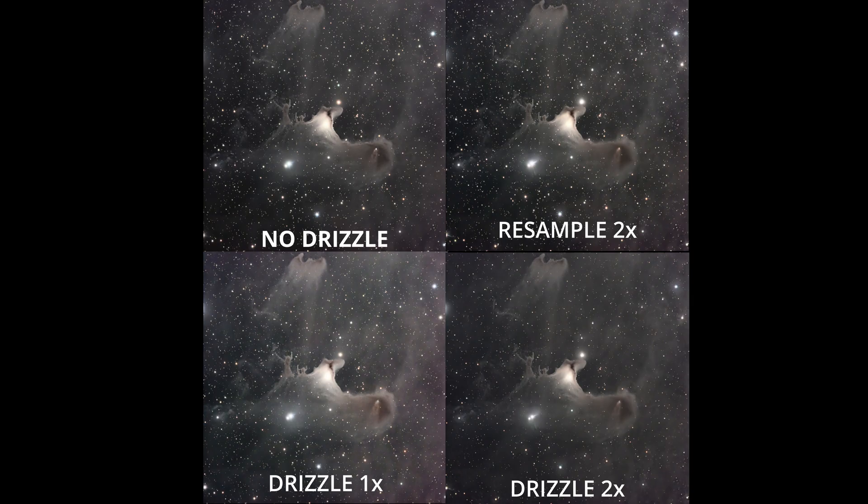Conventional astrophotography thinking holds that if an image is perfectly sampled, drizzling not only does no good — it can actually degrade the image. Yet in test after test, the difference between the undrizzled image on the top left and the drizzled image on the lower right is substantial. Even a perfectly sampled image benefits from drizzling. That presupposes good processing — if the image wasn't processed correctly, nothing can save it and you'd need to go back to the original data.